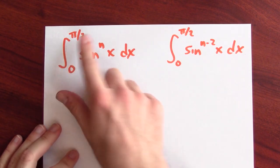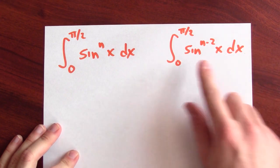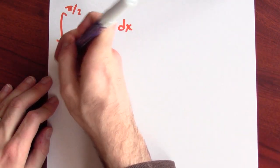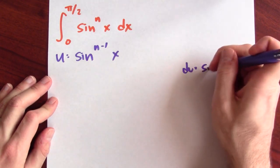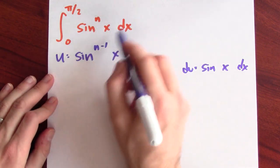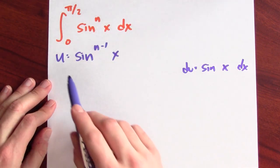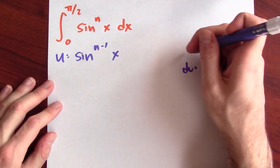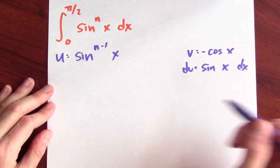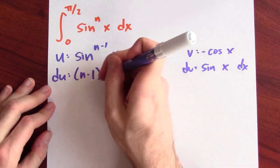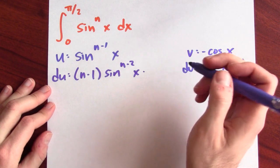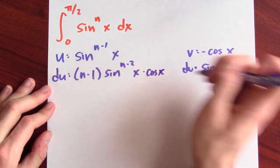To answer this question of why it factors, I want to figure out some relationship between the integral from 0 to pi over 2 of sine to the n and sine to the n minus second power. We'll use parts. I'll have u be sine to the n minus 1, and dv will be sine x dx. If dv is sine of x, then an antiderivative for that is minus cosine x. And if u is sine to the n minus 1, then du — by the chain rule — is n minus 1 times sine to the n minus 2 times cosine x dx.